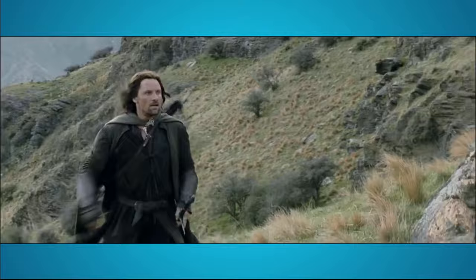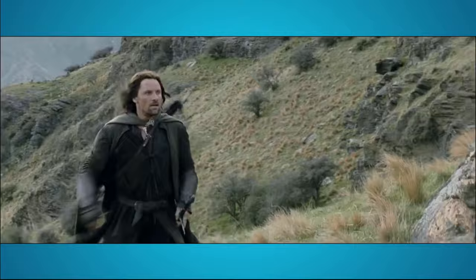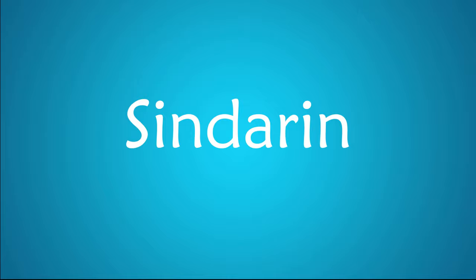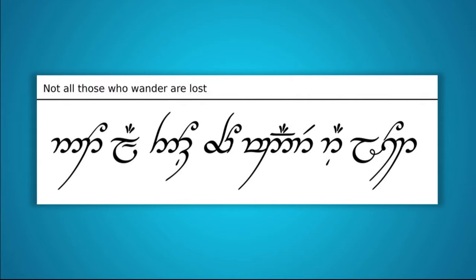Now, there's more than one elven language. The one I'm covering today is Sindarin, the one most commonly used in Tolkien's Lord of the Rings. The word Sindarin is itself derived from Quenya, the other popular elven language in Tolkien's books. The writing system of Sindarin is called Tengwar — you've probably seen it while watching the movies.